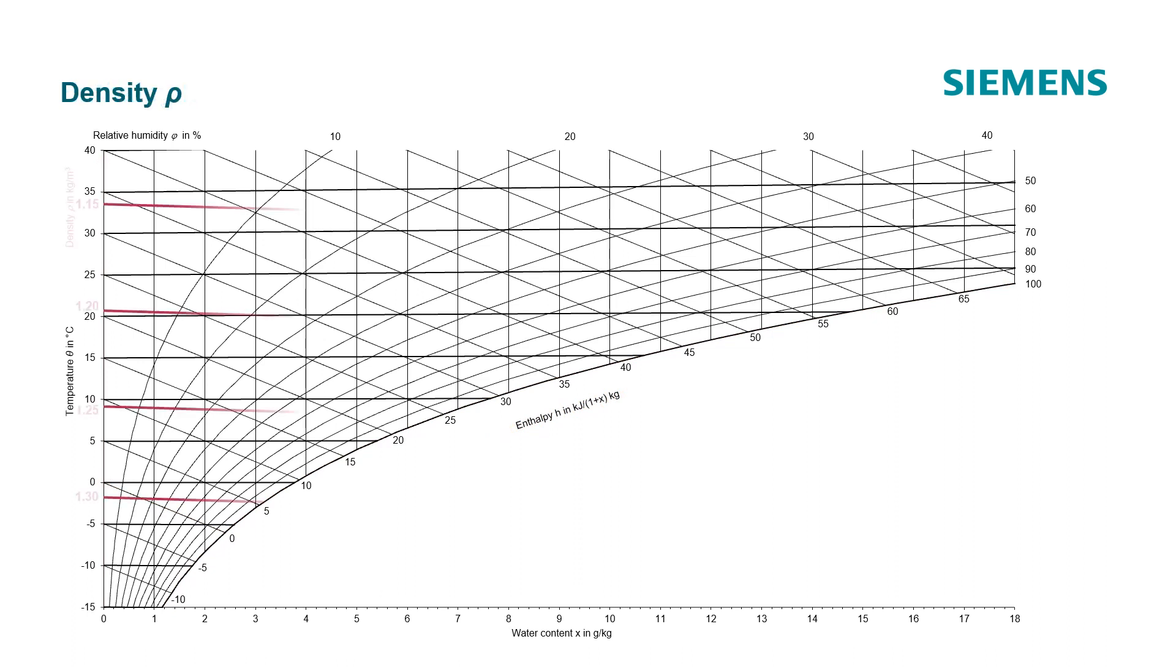The density: The density of the air is dependent on the temperature and the water vapor content. With rising temperature, the air expands and the density decreases. With rising water vapor content the density of the humid air mixture decreases, due to the lower density of the water vapor. Because of this fact the density lines slightly decline to the right side.